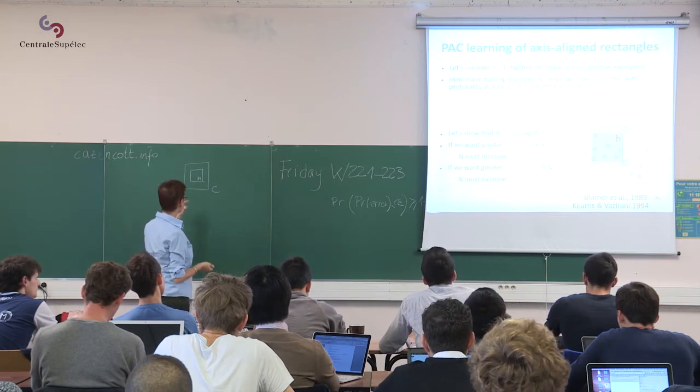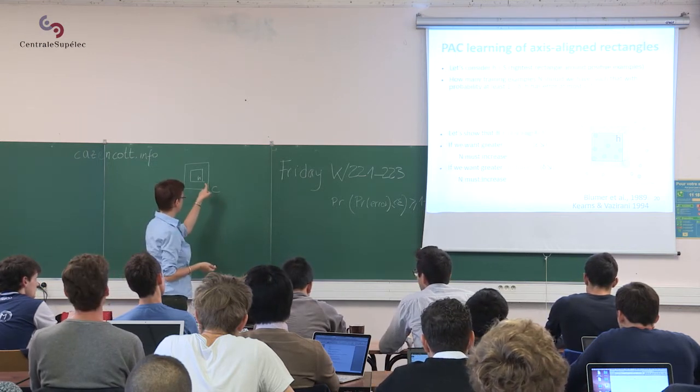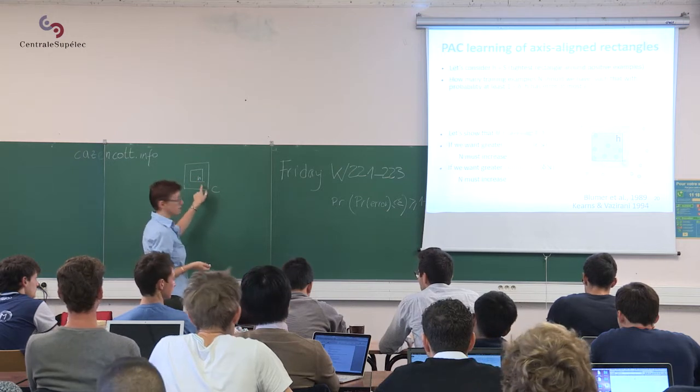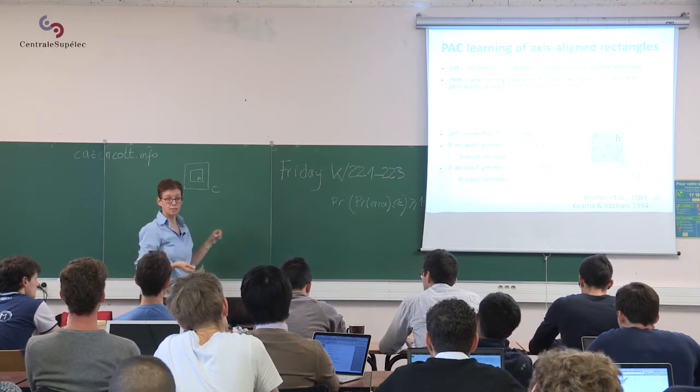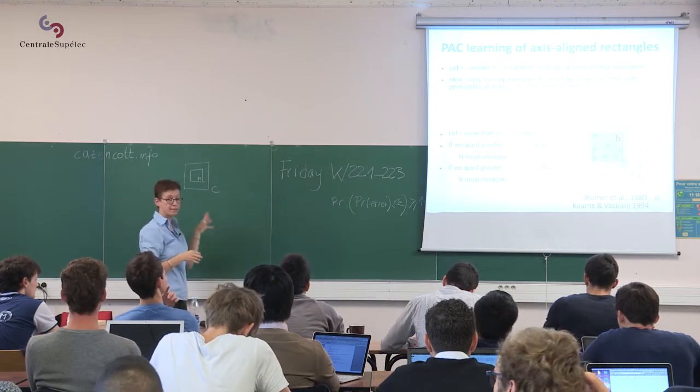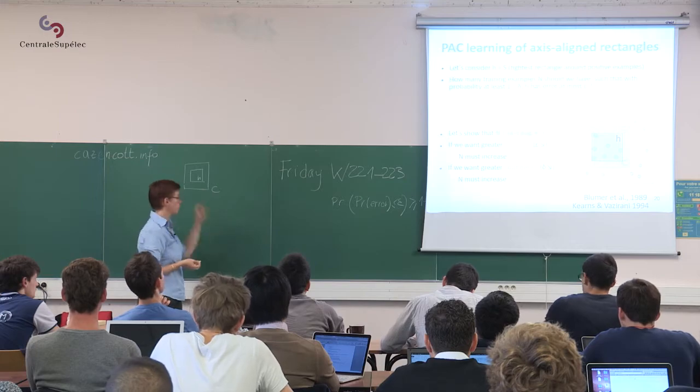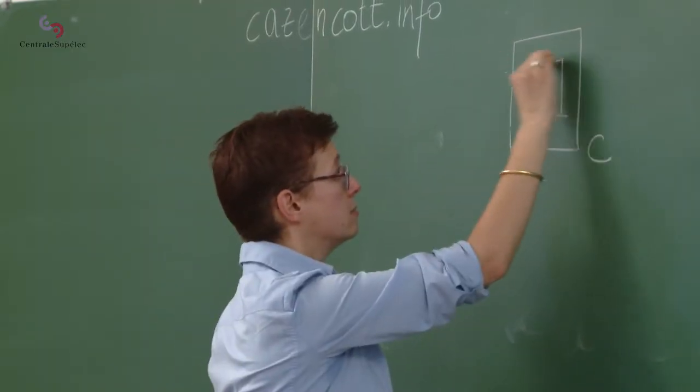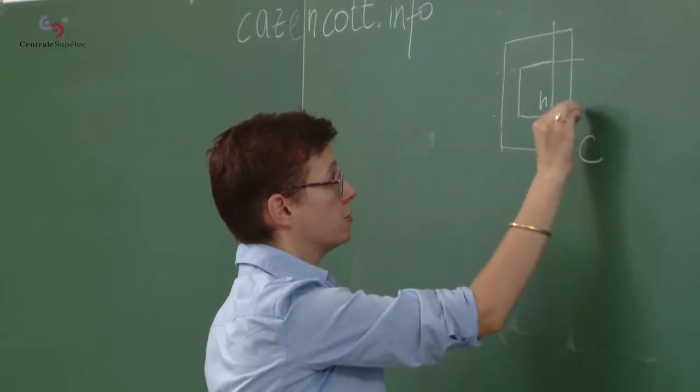Okay, so making an error means putting a positive example in between H and C, right? So, I'm going to say, we're going to be thinking in strips, so I'm going to build strips here. So we have four such strips.